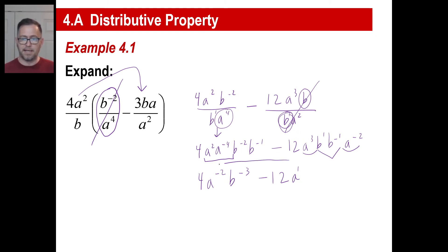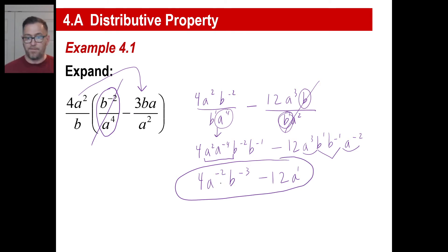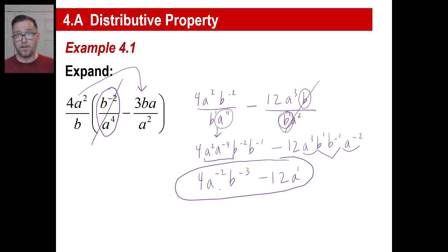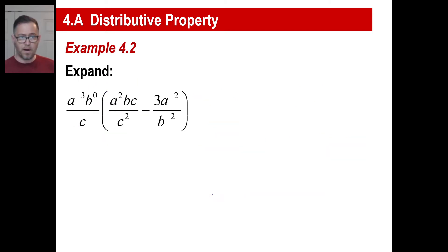That is your answer. In the back of the book they might have it with different placement of some of these variables — if they have the a squared down in the denominator as a to the positive 2, that's correct; they've just moved it down. Pause and copy this one.